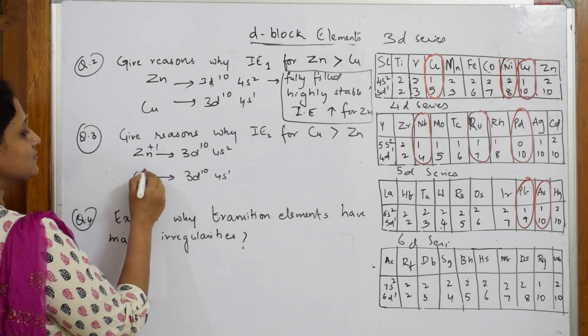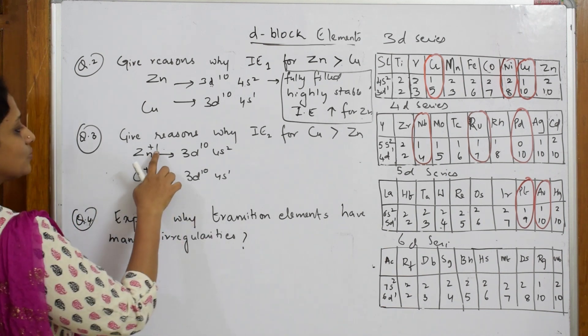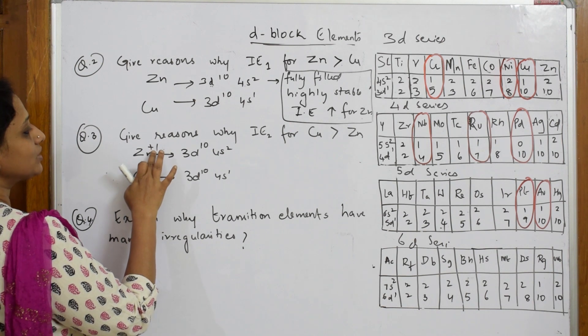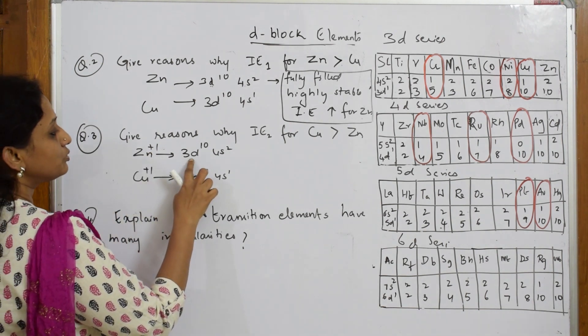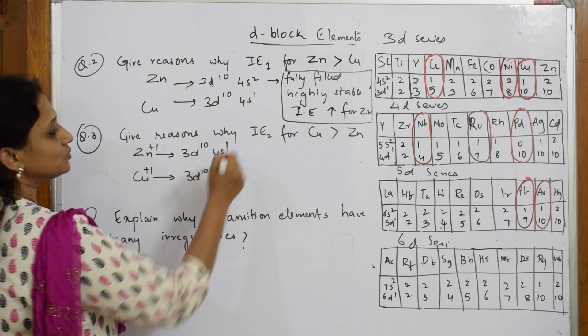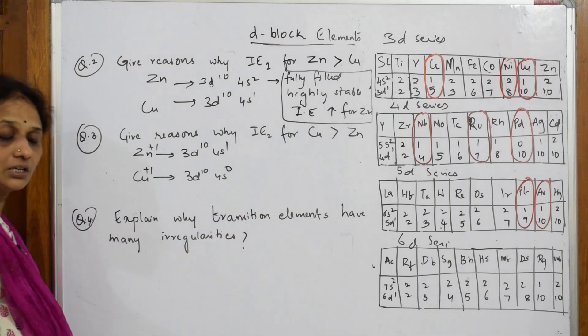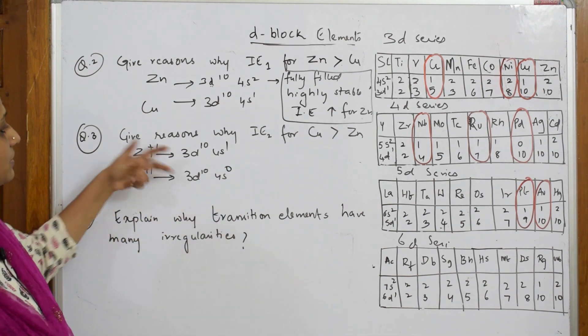Second ionization enthalpy means it should be Zn - if I have to say Zn plus 2. One electron I have to take because only one ionization enthalpy from here till here - isn't it Zn plus 1 and Cu plus 1? Because only after removing one, then you'll remove the second one. So when I'm removing one electron from where should I remove? I have to remove from here, so this becomes 4s1.